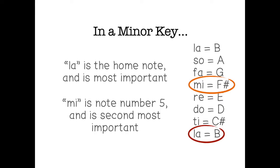Once we have a minor key, we've just said it loads, la is the home note. That's the most important note. In this case, a B. And then if we count up to note number five, that's a me in a minor key. So in this possible minor key, B and F sharp are our two important notes that we're looking for.